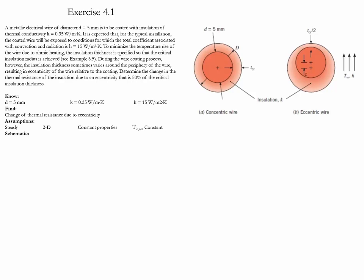Example 4.1. In this example, we have an electrical wire of a given diameter, which is surrounded by an insulation layer. The whole system is exposed to convection.